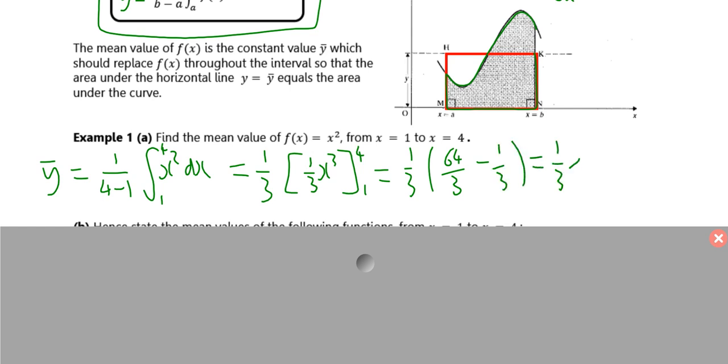That's the same as a third times, well, 64 thirds take away 1 third, which is 63 thirds, which is 21, which means the mean value of that function is 7. The area under the graph of y equals x squared is the same as the area under the horizontal line of y equals 7, if you measure areas between 1 and 4. That's all that's involved.